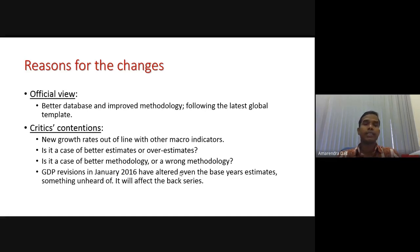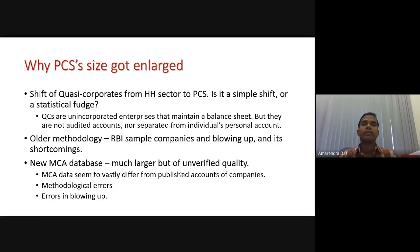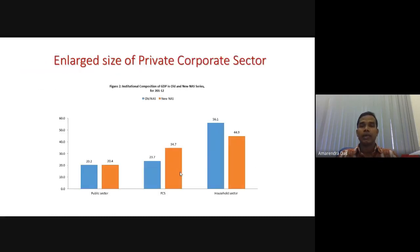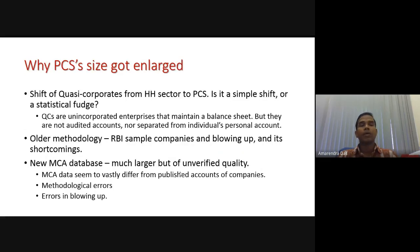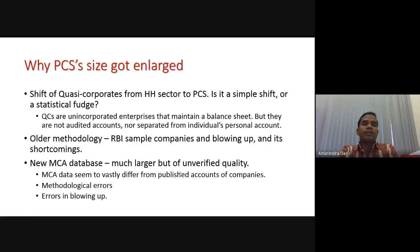Critics however say that the new growth rates are out of line with macro indicators like credit-deposit ratio and capacity utilization — so how is GDP showing a higher growth rate? The reason the private corporate sector output increased by 11% is explained as a shift of quasi-corporates from the household sector to the private corporate sector. Professor R. Nagaraj questions whether this is a real shift or a statistical artifact. His argument is that quasi-corporates are unincorporated enterprises that maintain a balance sheet but are not audited accounts, nor separated from the individual's personal account.